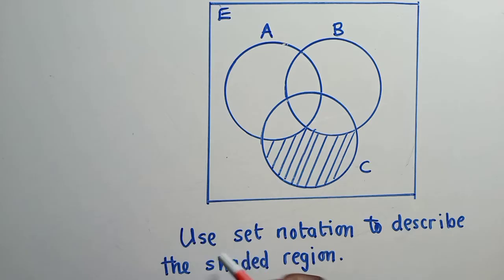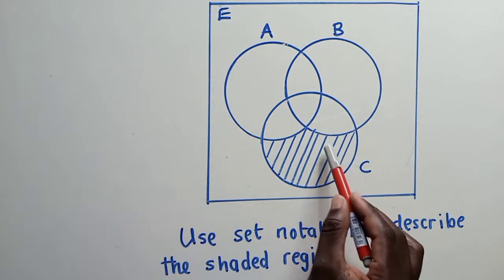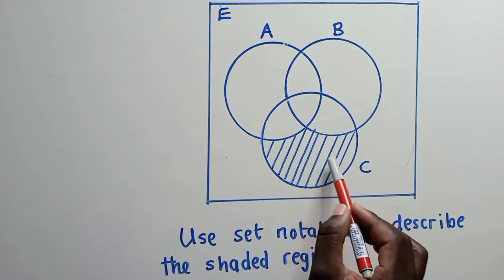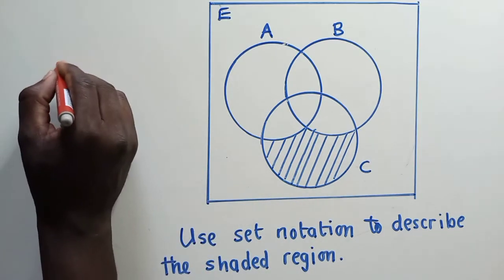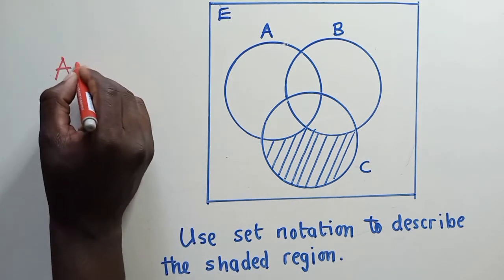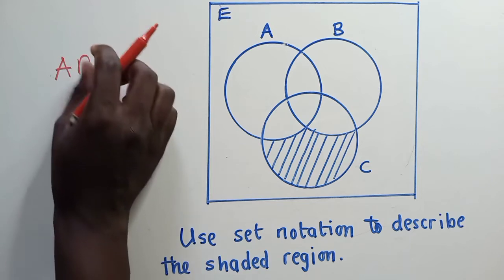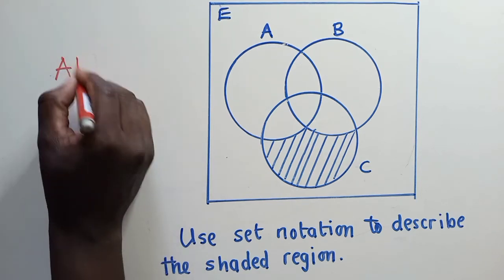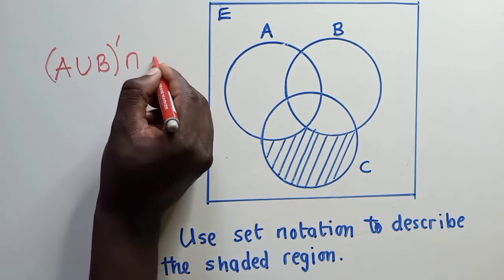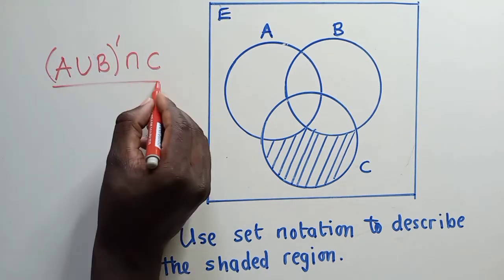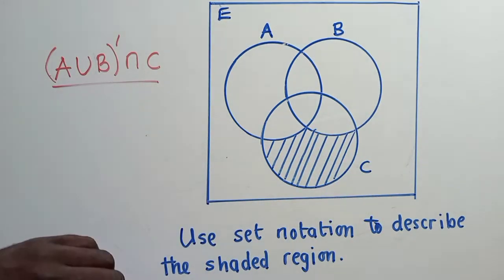I've got this question where I've been asked to use set notation to describe the shaded region. So we need to describe this shaded region using set notation. Just by looking, this is A union B complement intersect C. This is the solution.